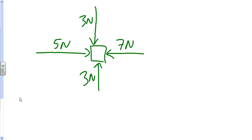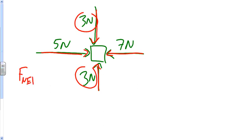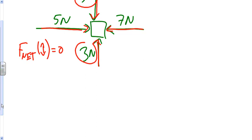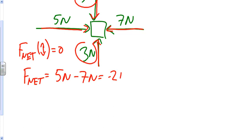Here's another example of another force diagram. In this case, we have 4 force vectors acting on the box in the center. We have two 3-newton forces, one going down and one going up. We have a 5-newton force going to the right and a 7-newton force going to the left. The 3 newtons and the other 3 newtons have the same magnitude and are in the opposite direction, so if we add those two together, they cancel out. The net force in the y direction is 0. For the net force in the x direction, you have the 5-newton force to the right and the 7-newton force to the left. So f-net equals 5 newtons minus 7 newtons, which gives a negative 2-newton force to the left.